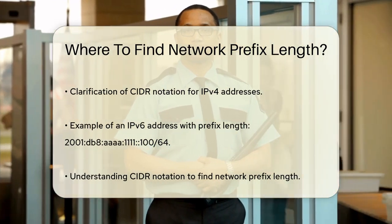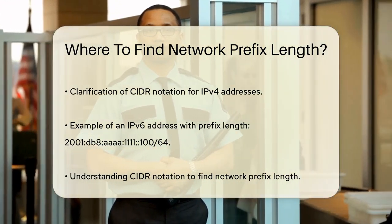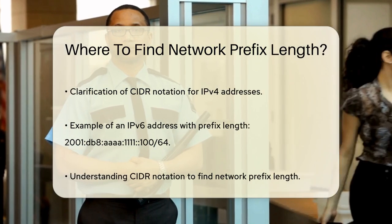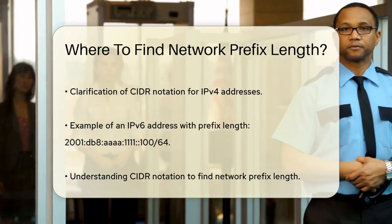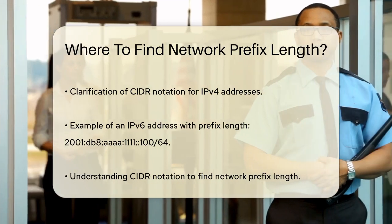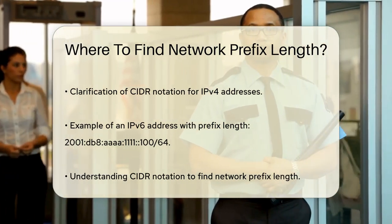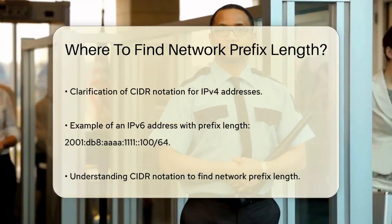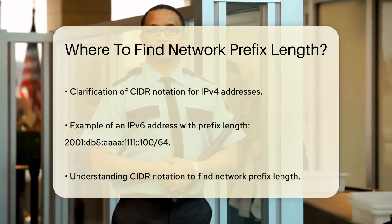In IPv6, the notation is similar but uses a much larger address space. An IPv6 address might look like 2001:DB8::AAA:1111/64. Here, the /64 tells you that the first 64 bits of the address are the network prefix.